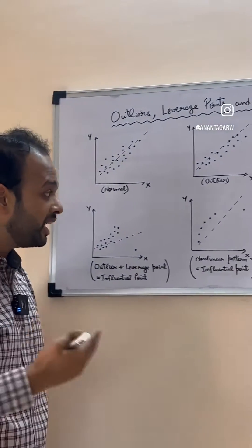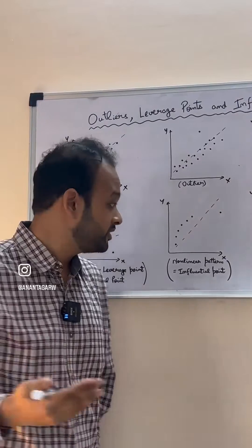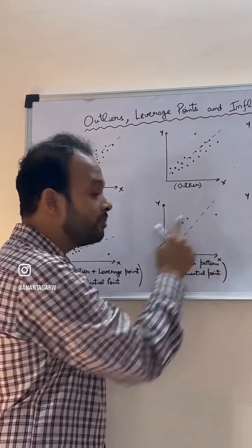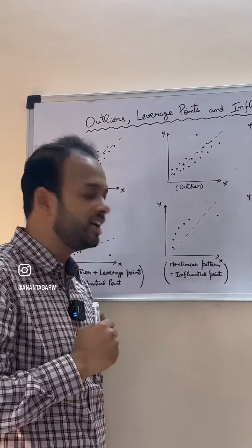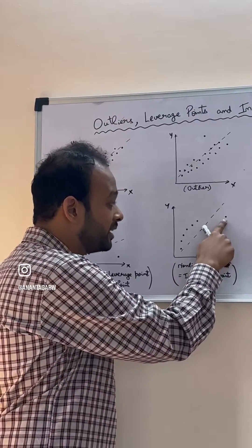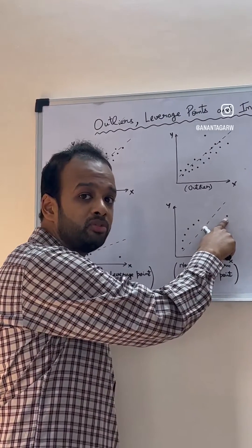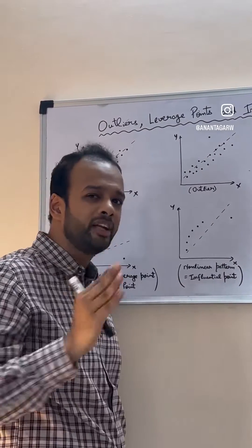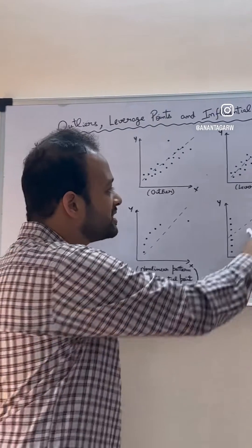Now, there can be other cases where we can see influential points. For example, here there is a non-linear pattern and we are fitting a regression line through it, and that's why this point is influential. If you remove this, the line will change. So it's better to fit a non-linear model to this.